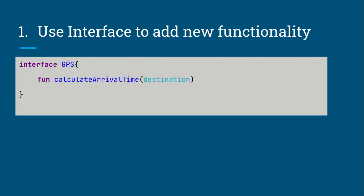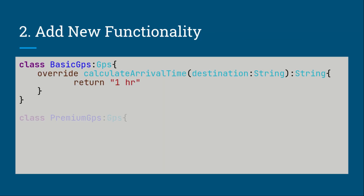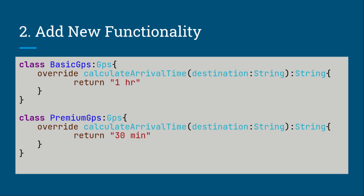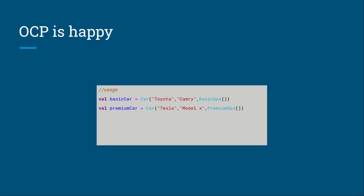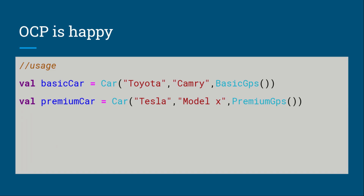So how can we fix this? We can use an interface to add new functionality. We introduce an interface for GPS that calculates the arrival time given a destination. We also use SRP here to help achieve this. We create a basic GPS class that takes one hour and a premium GPS class that takes 30 minutes. If we want to add a 'Premium Pro Max' GPS that takes only 10 minutes, we can easily add it. Then we create a basic car and a premium car that depend on the GPS interface rather than a concrete implementation, so we can easily swap the car model to a different one. OCP is satisfied.